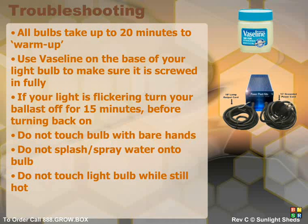If your bulb does not seem to be fully powering up, put a small amount of Vaseline on the base and try screwing it into the socket as tight as possible. Small pieces of glass or metal are commonly found inside the bulb — this is normal.